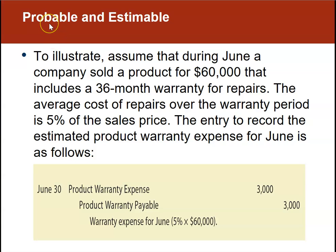The first category of contingent liabilities we'll look at are those that are probable — meaning likely to happen — and estimable — meaning we can estimate how much we're going to owe. A very common example: during June, a company sold a product for $60,000. For our purposes, this $60,000 is made up of multiple sales — maybe these items are $50 or $75 apiece.